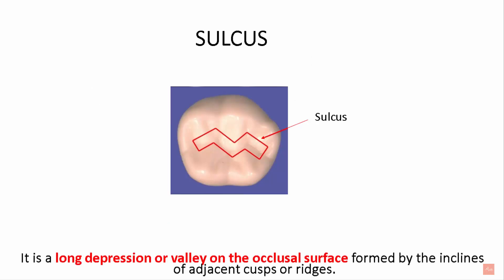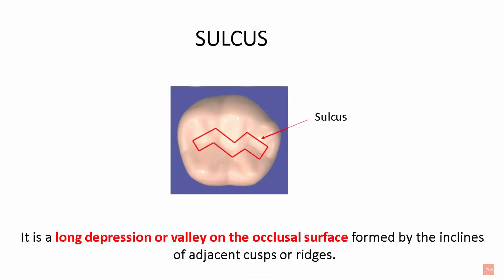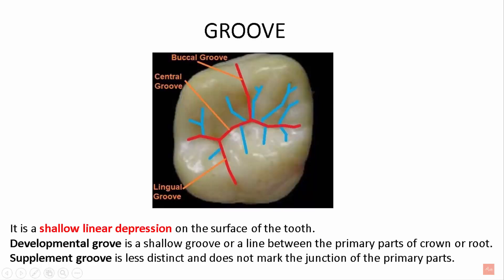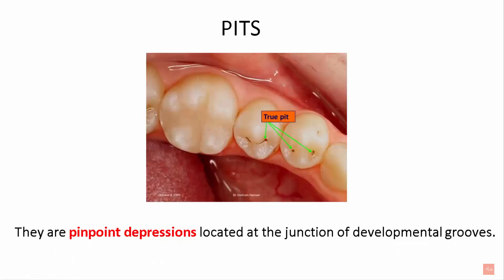Sulcus is a long depression or valley on the occlusal surface formed by inclines of adjacent cusps or ridges. A groove is a shallow linear depression on the surface of the tooth. A developmental groove is a shallow groove or line between the primary parts of the crown or root. A supplemental groove is less distinct and does not mark the junction of the primary parts. Pits are pinpoint depressions located at the junction of the developmental grooves.